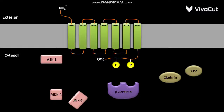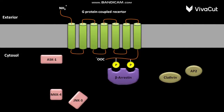The GPCR or G-protein coupled receptor has phosphorylated serine at 309 amino acids in its C-terminal segment. Beta-arrestin then binds to the phosphorylated serine at 309 amino acids in the C-terminal segment of the G-protein coupled receptor.